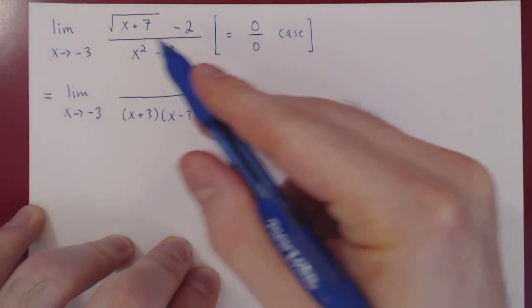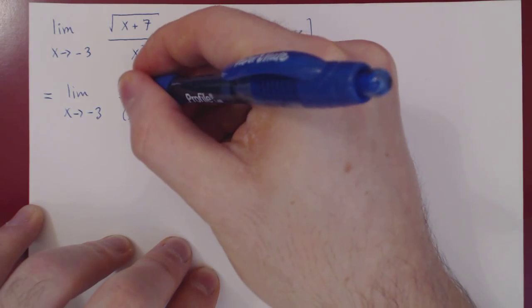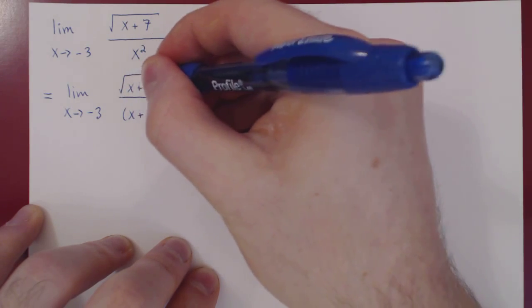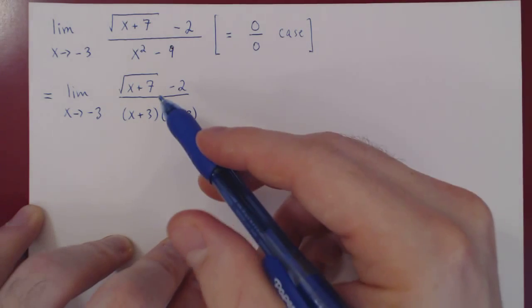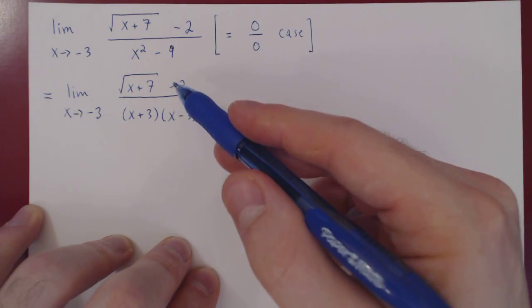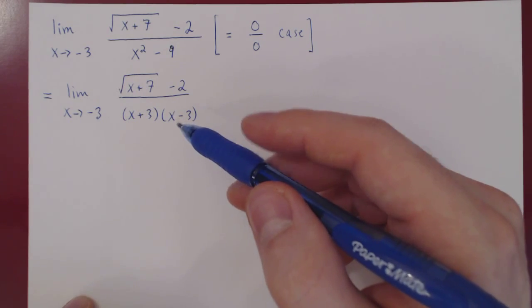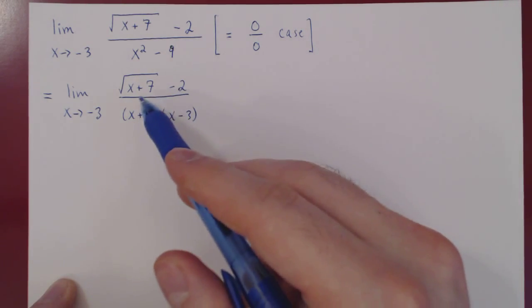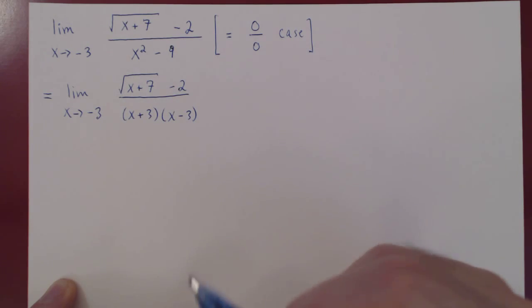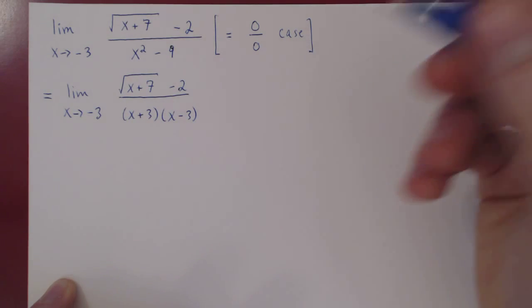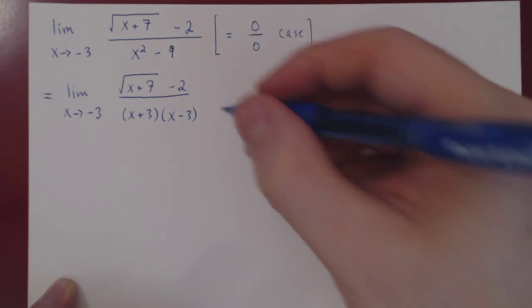Now what about the numerator? We have a difference of two terms: x plus 7 and 2. If we leave it like this, we still have a 0 over 0 case and we can't do anything about it. The idea is: is there a way to remove the square root so that we can factor the leftover polynomial? The answer is yes, and the idea is to use the conjugate.